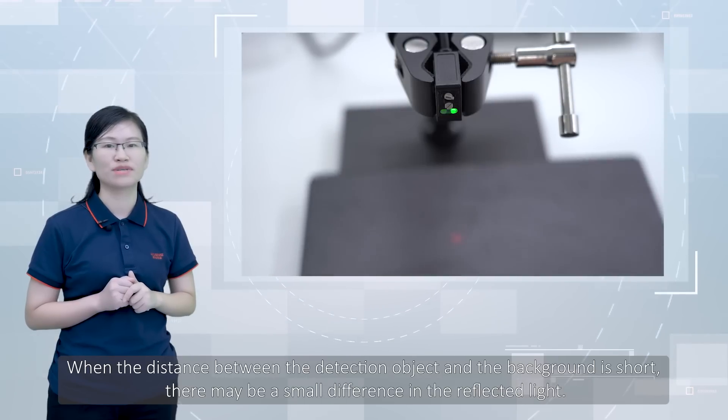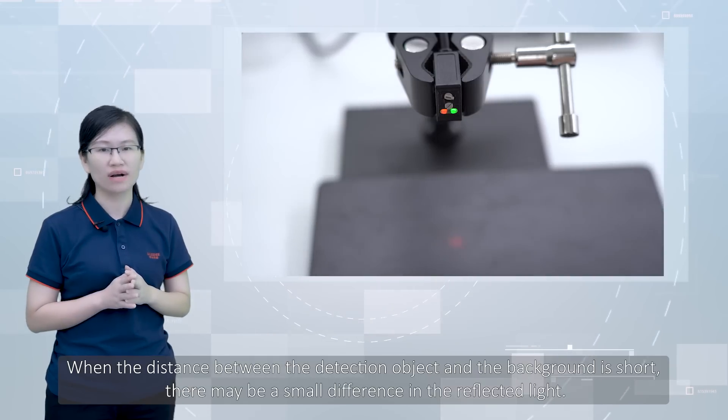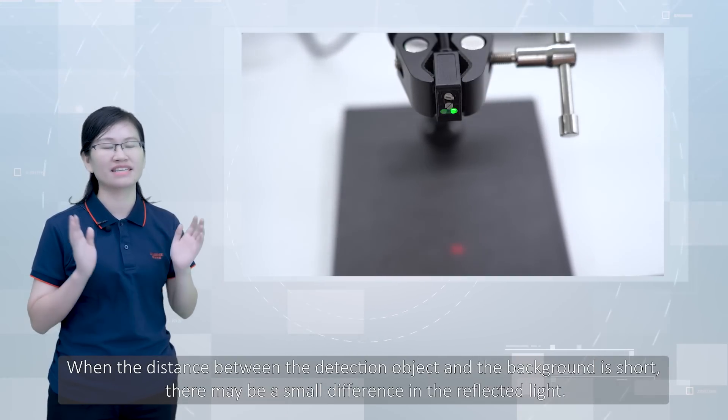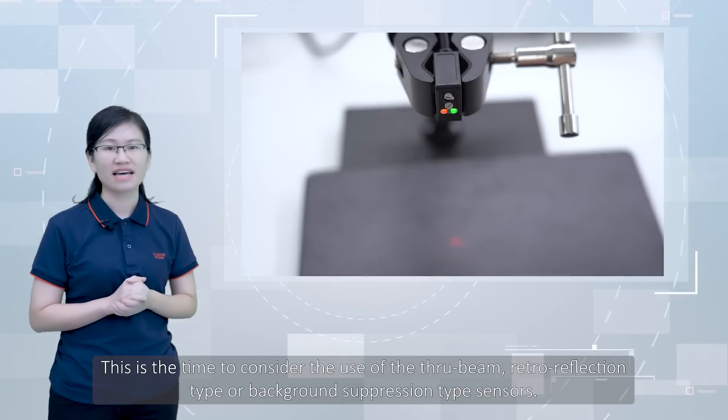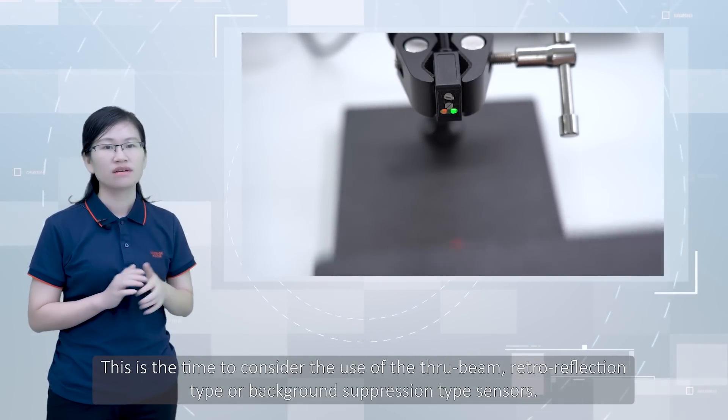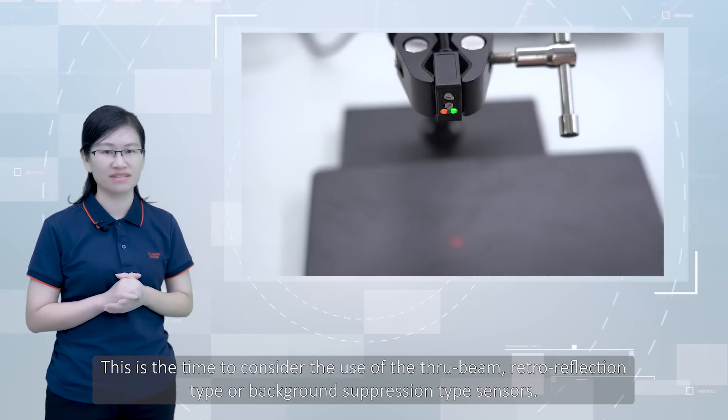When the distance between the detection object and the background is short, there may be a small difference in reflected light. This is time to consider the use of the through-beam, retro reflection type, or background suppression type sensors.